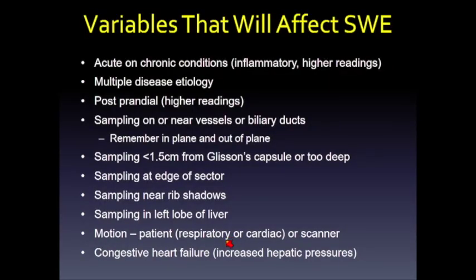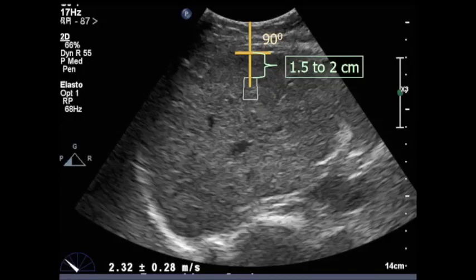Each vendor has their own frequency and bandwidth of the ARFI pulse and their own software and technique for analyzing data, so there is variability between machines. At this point in time, you cannot use the same cutoff values across vendors — you need to obtain the appropriate cutoff values from each vendor. The FDA prefers meters per second, but because FibroScan initially used kilopascals, hepatologists and drug companies tend to prefer that unit.